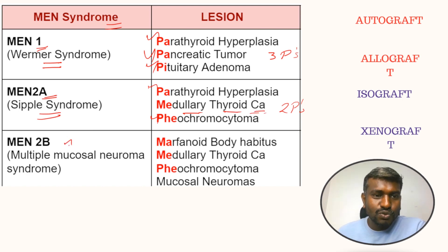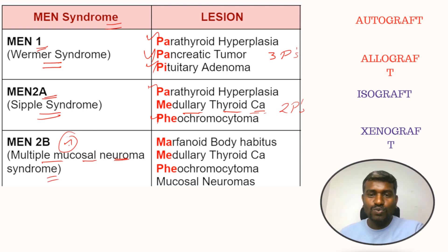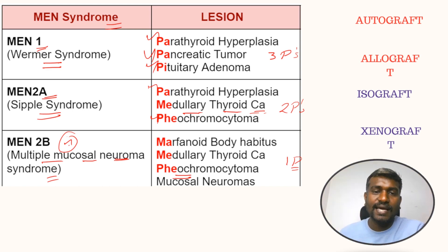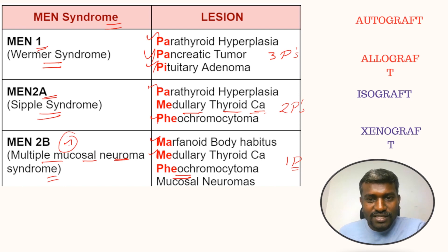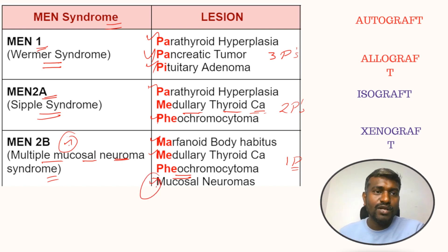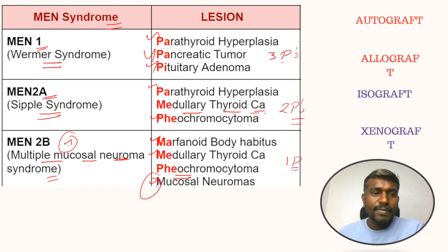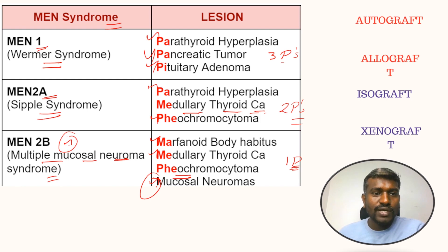MEN 2B is also called multiple mucosal neuroma syndrome. It has one P — pheochromocytoma — and the remaining features start with M: marfanoid body habitus, medullary thyroid carcinoma, and mucosal neuromas. Remember: MEN 1 has three P's, MEN 2A has two P's, MEN 2B has one P. Both MEN 2A and 2B have pheochromocytoma.